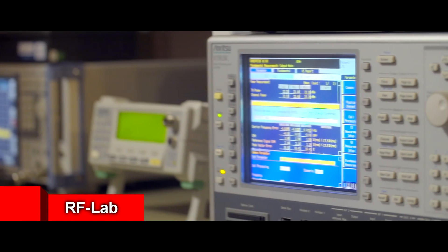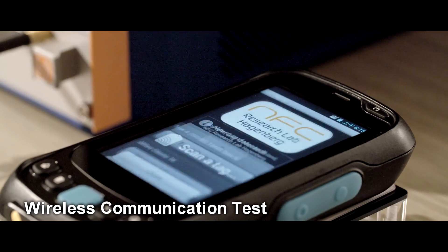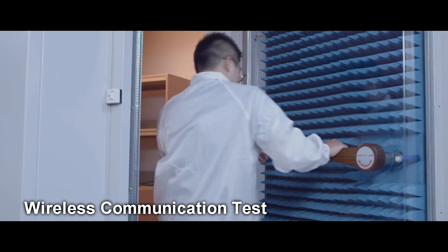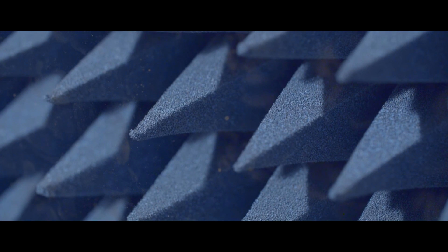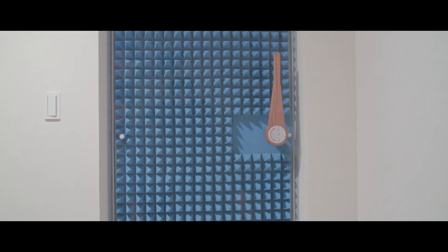In the RF lab, function and signal quality of critical wireless communication interfaces are verified. The lab itself is a shielded environment, insulated up to 100 decibels from 100 kHz to 18 GHz against electromagnetic signals and interference.